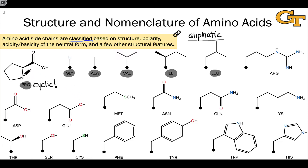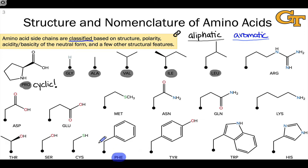That gives proline some interesting spatial properties, but at the end of the day it's really an aliphatic amino acid. We can also identify a number of side chains that contain aromatic structures, and these contain either benzene rings or aromatic heterocycles within the side chain. For example, phenylalanine contains a side chain with a CH2 group and a benzene ring, and the very similar tyrosine contains a phenol ring linked to a CH2 group in the side chain. We also find aromatic heterocycles in a few side chains, such as the indole ring in tryptophan and the imidazole ring in histidine.